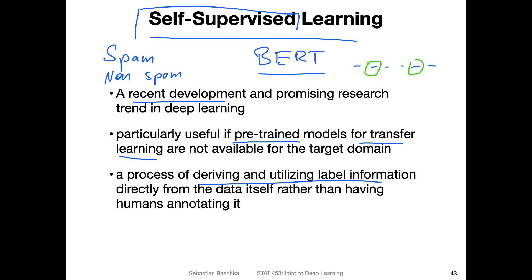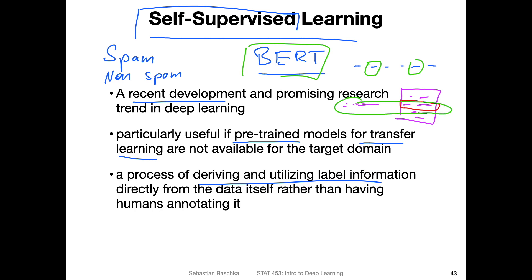Another self-supervised task within the BERT system is predicting whether a certain sentence is contained in a document. For example, if you have a document with multiple sentences, you remove one of the sentences, or you take a sentence from a different document, and then you let the system predict which of the two sentences is actually in the real document. You kind of make up these classification tasks from the data without needing a human to label it, and in that way you teach the model to understand sentences.